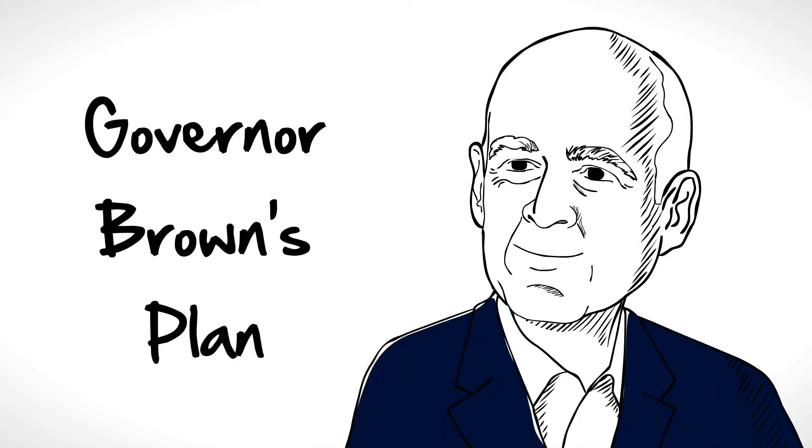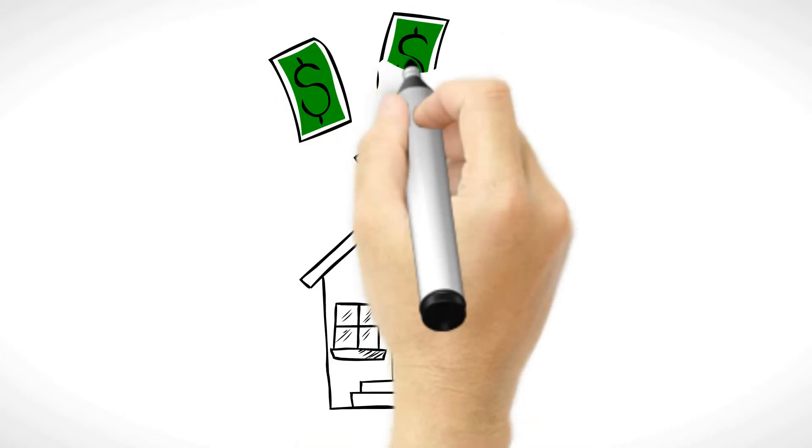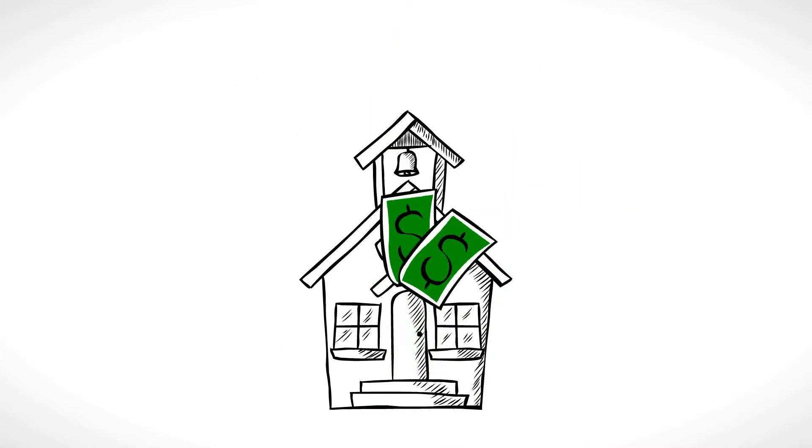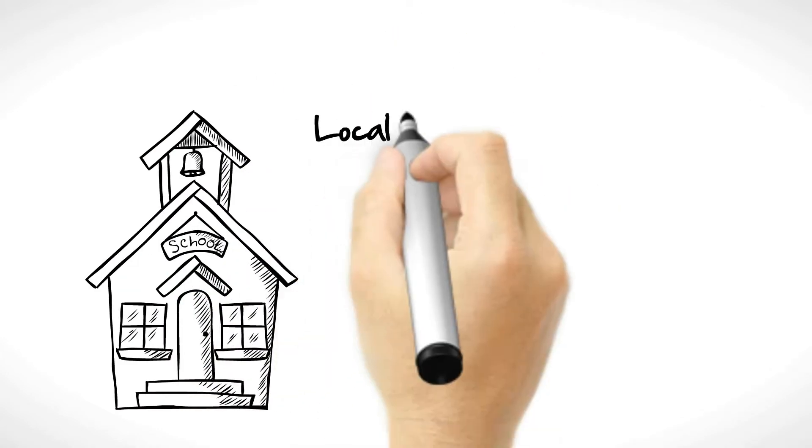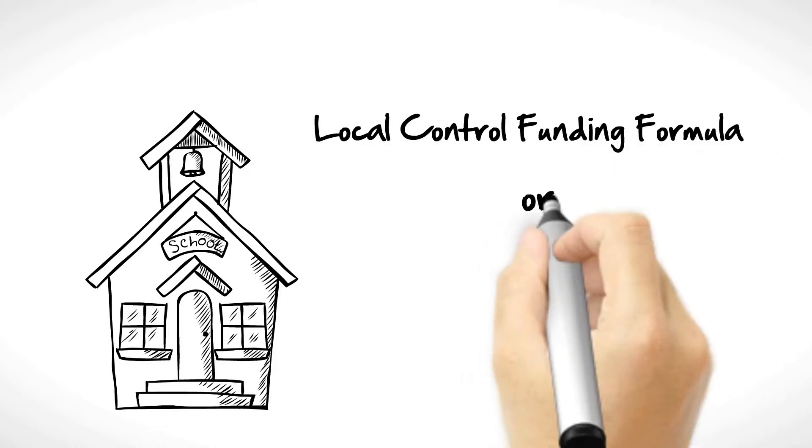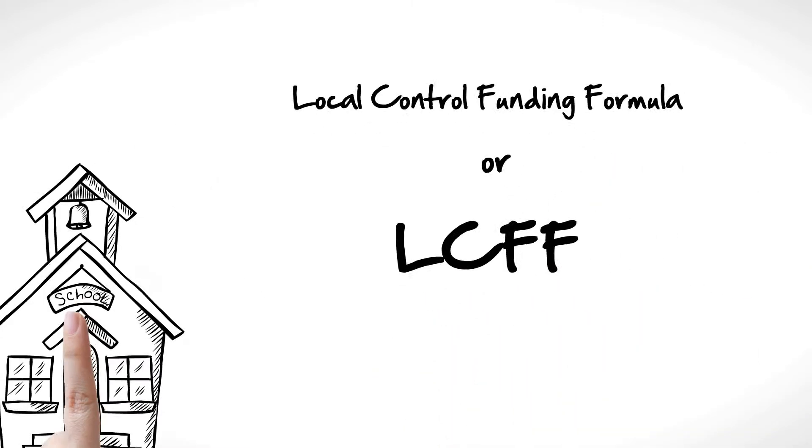The governor has a plan to fix these funding problems. He wants to improve the way we fund schools. The plan is called Local Control Funding Formula, or LCFF. The plan does the following.